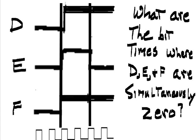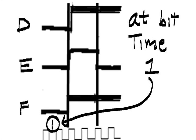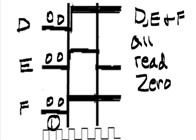So what are the bit times where D, E, and F are simultaneously 0? At bit time 1, you have 00, 00, and 00. D, E, and F all read 0.